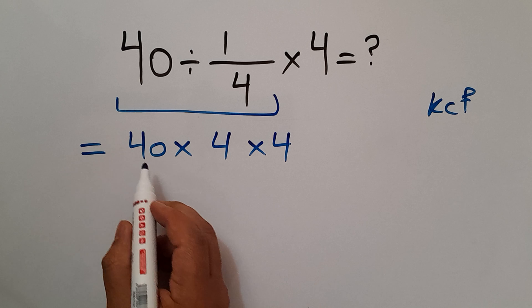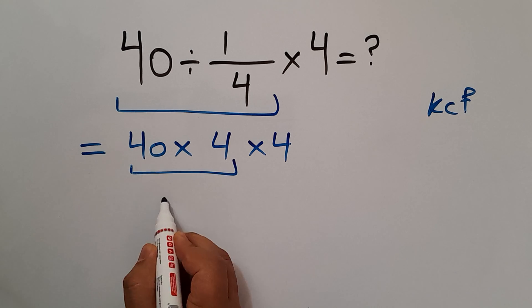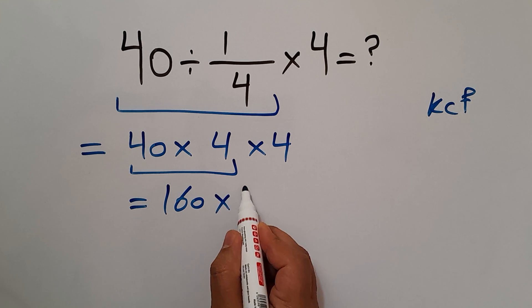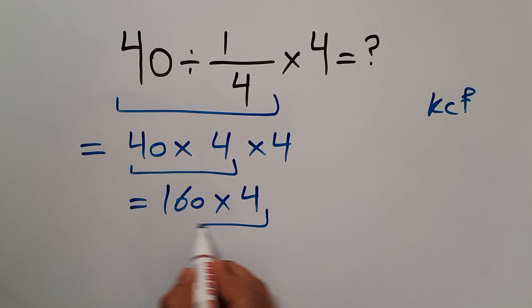Now, 40 times 4 gives us 160, and 160 times 4 equals 640. So our final answer to this problem is 640.